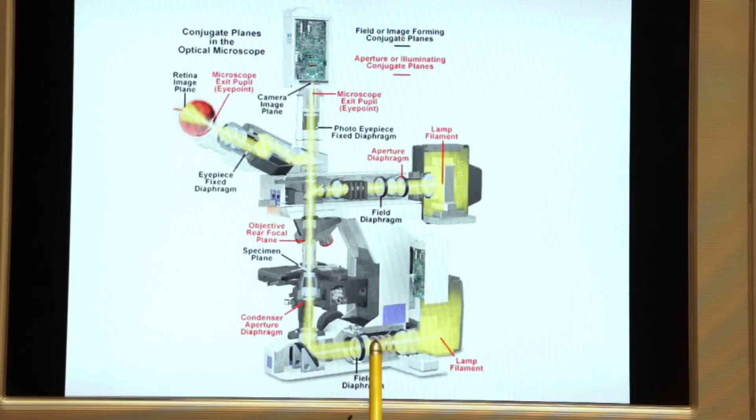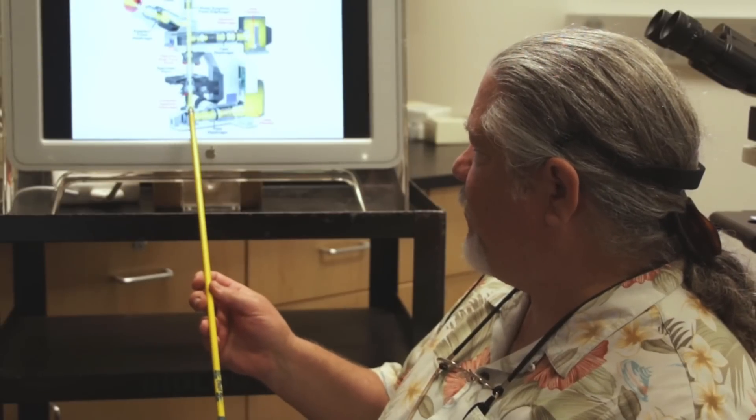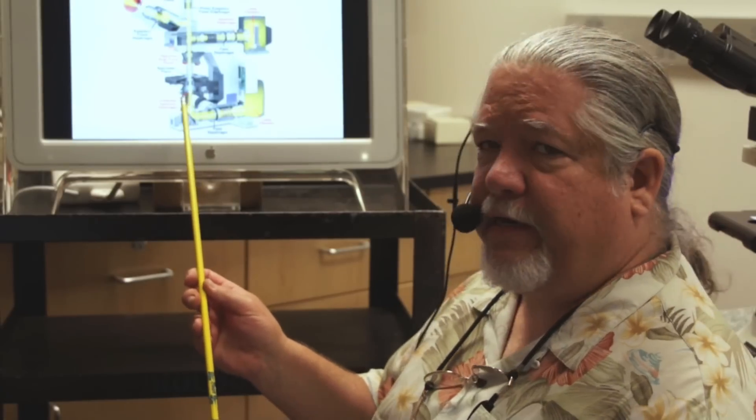The light then travels through the field diaphragm and is reflected off a right angle mirror and it leaves the base. It leaves the base of the microscope and now it travels into the condenser.